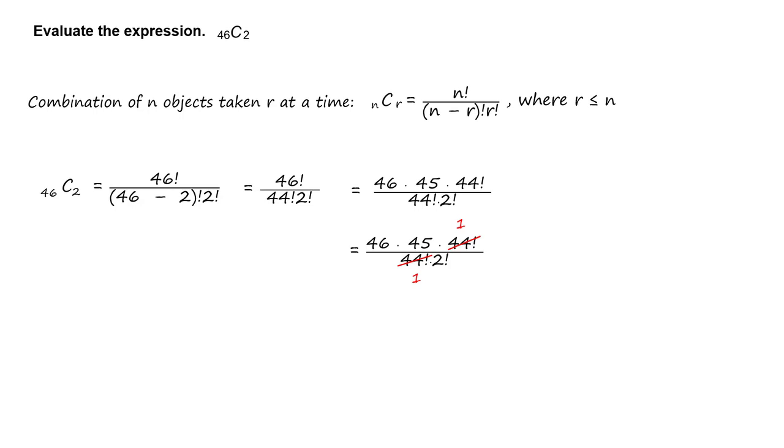Divide out the common factor of 44 factorial. Rewrite as 46 times 45 divided by 2 times 1.